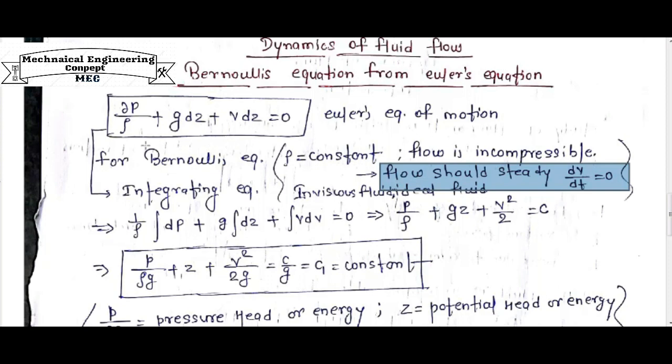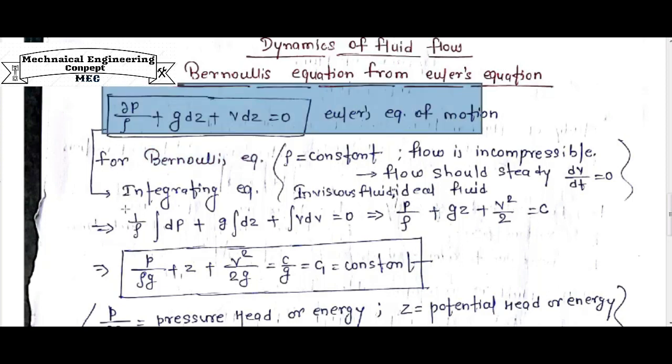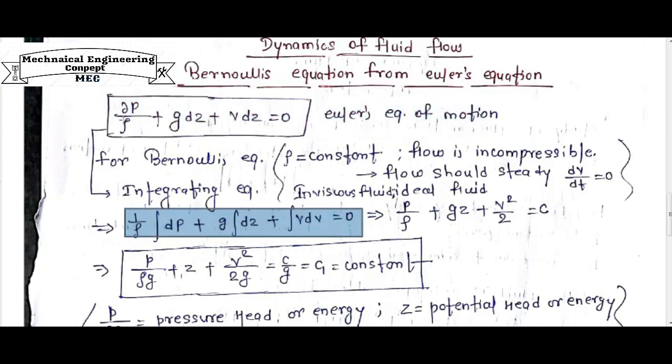For Bernoulli's equation, rho is a constant term. Taking rho as constant and integrating this Euler equation, we get this as resultant: 1 by rho integration of dP plus g is constant, integration of dz plus v dv is equal to 0.